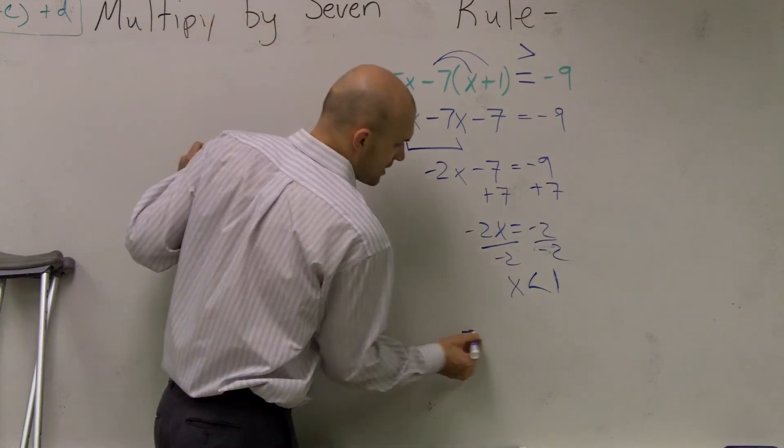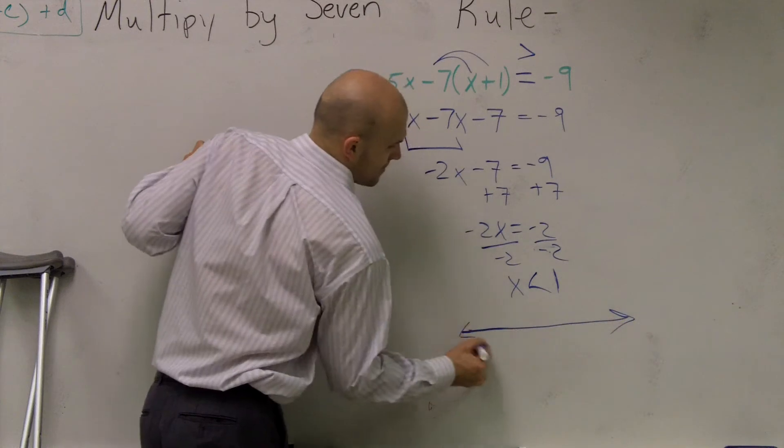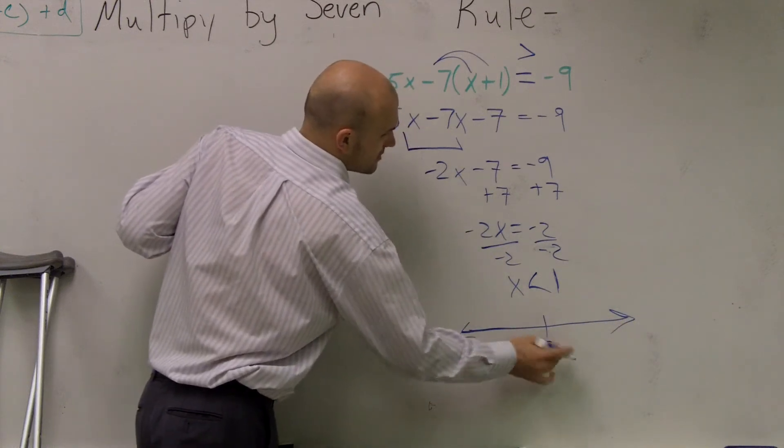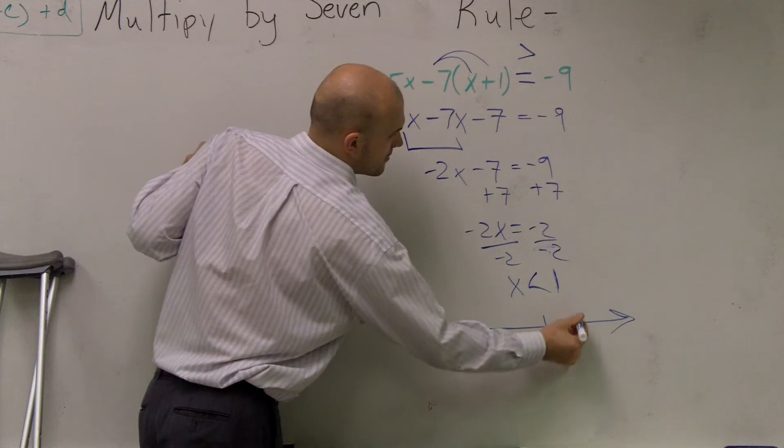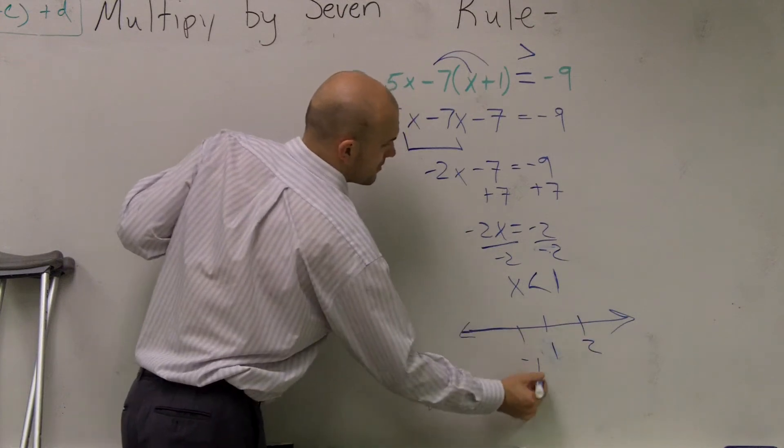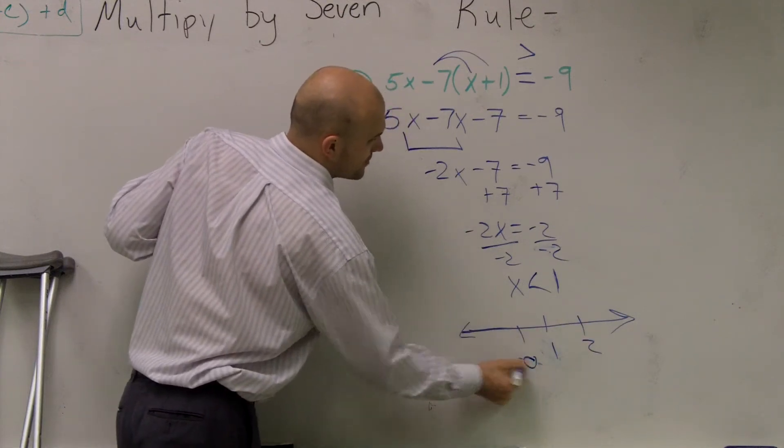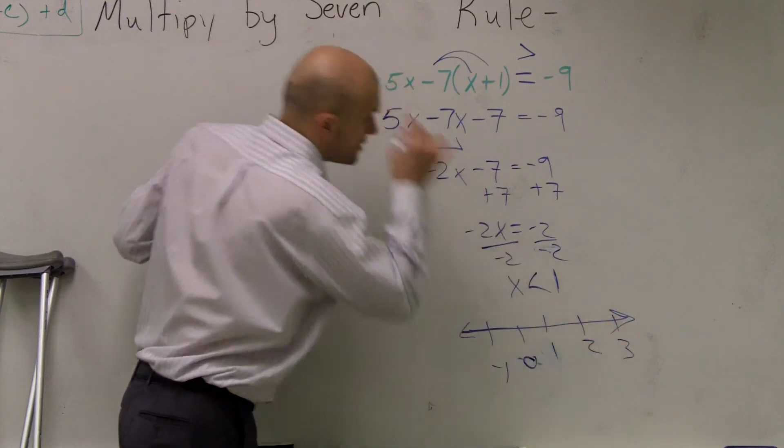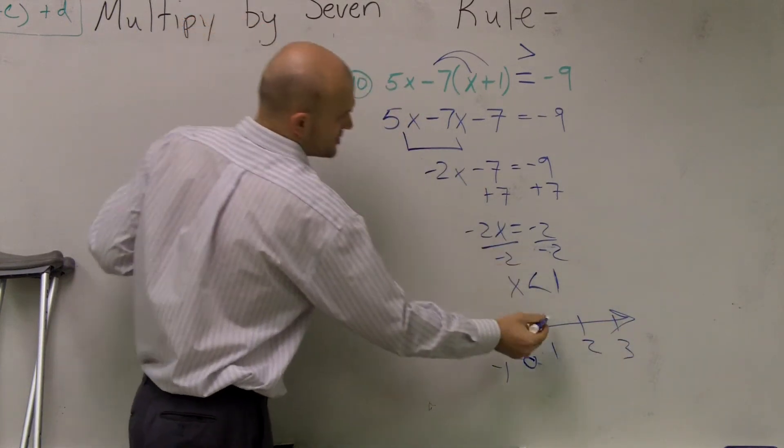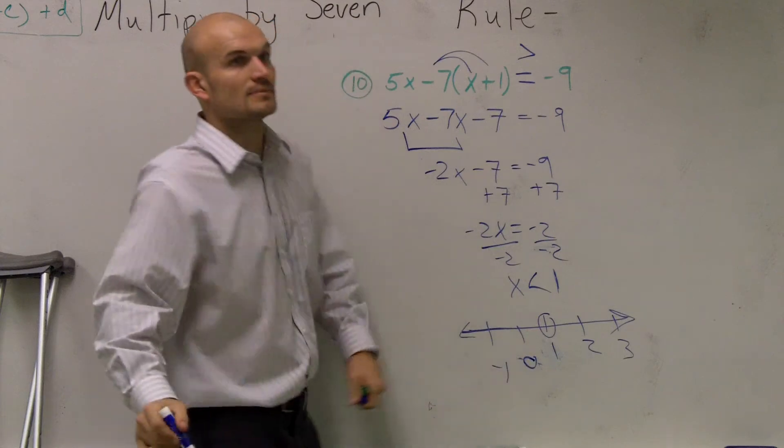So when I go and do my number line, I go to 0. Let's just go to 1. That's 0. That's negative 1. That would be 3. So remember, you go and make a circle at 1.